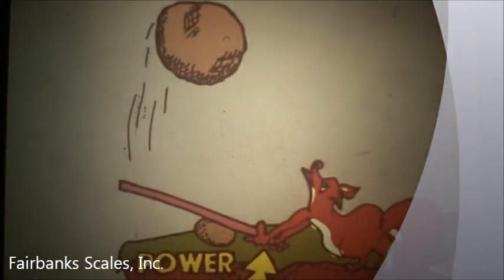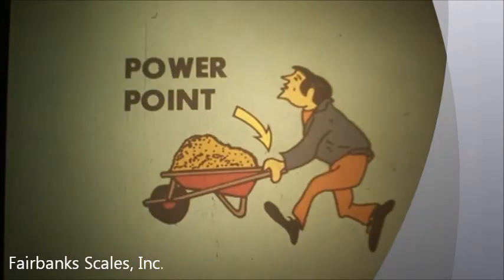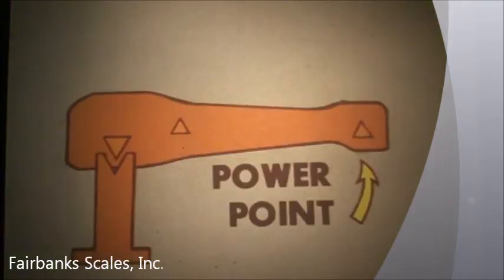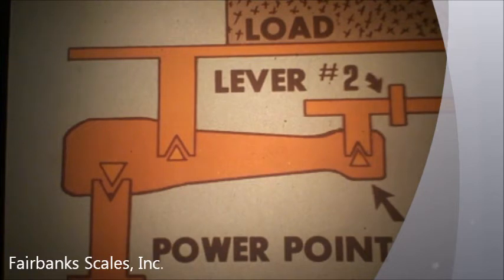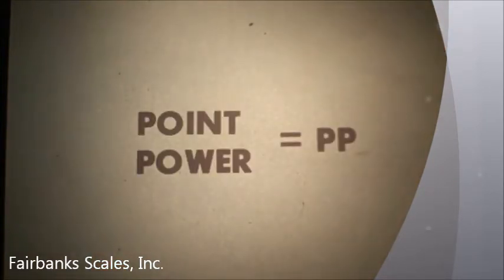The third point on a lever is the power point — the spot where a force is applied to move the load. On the wheelbarrow, the power point is the handle. The power point can also be the point at which the force of the load is transferred elsewhere, as in this motor truck scale. Power point is abbreviated PP.